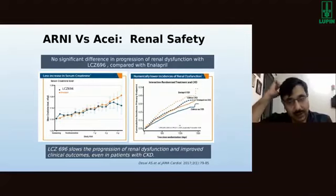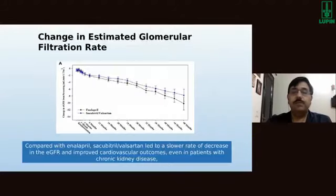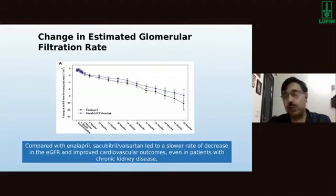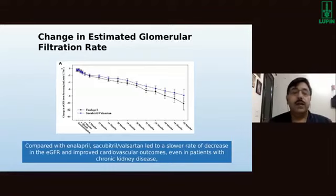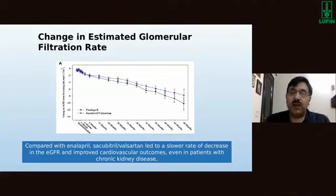We must use optimal dosages of ARNI and treat patients properly. As far as estimated glomerular filtration rate changes are concerned — comparing ACE inhibitor versus ARNI — ARNI showed a great advantage. Sacubitril/valsartan led to a slower rate of decrease in eGFR and improved cardiovascular outcomes, even in patients who had chronic kidney disease.